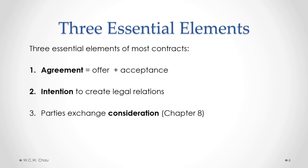There are three essential elements to have a valid legal contract. The first element is that there has to be an agreement, and an agreement arises when one party makes an offer and the other party accepts that offer. We'll look at what is an offer and what is an acceptance in much more detail in this module. The second element is that there has to be an intention to create legal relations — did the parties reasonably intend to create a legally binding contract? The third essential element, which we will cover in a subsequent module, is that there has to be an exchange of consideration between the two parties to the contract.